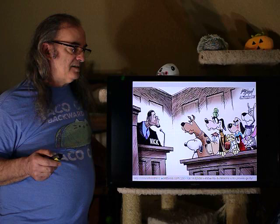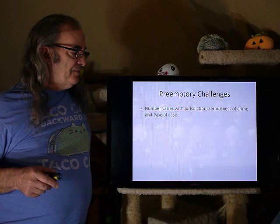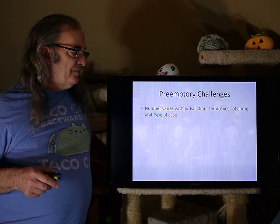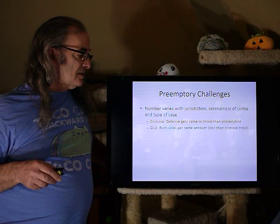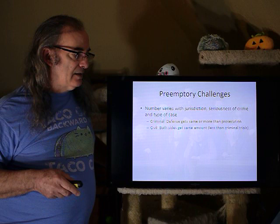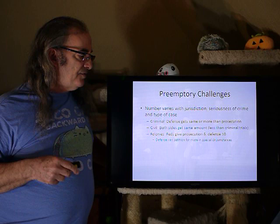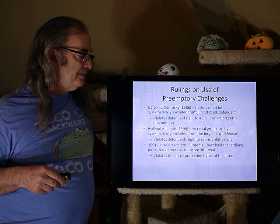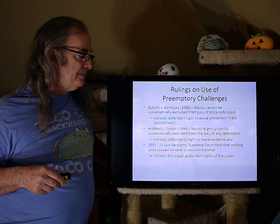The number of peremptory challenges varies with jurisdiction, seriousness of the crime, and type of case. In criminal trials, the defense gets the same or more challenges than the prosecution. In civil cases, both sides get the same amount, typically less than in criminal trials. For federal felonies, the prosecution gets six and the defense gets ten — usually biased in favor of the defense, though the defense can petition for more in special circumstances like pretrial publicity.